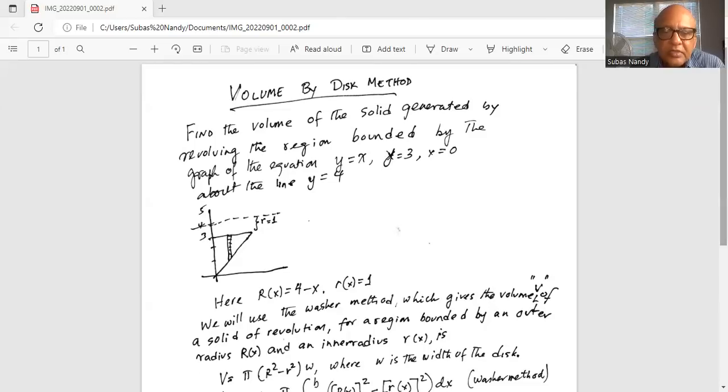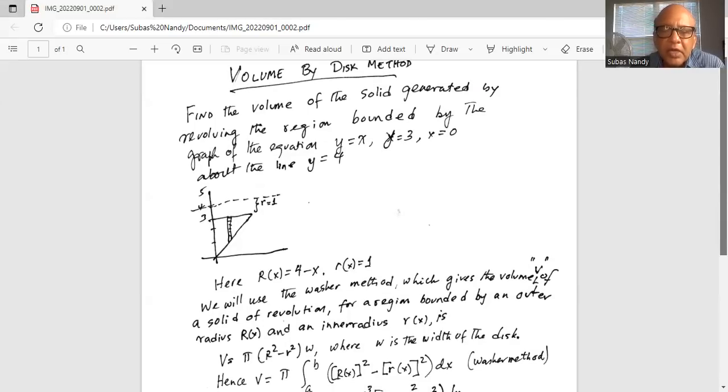So volume is pi multiplied by capital R square minus small r square w, so volume of the washer where w is the width of the disk or width of the washer.